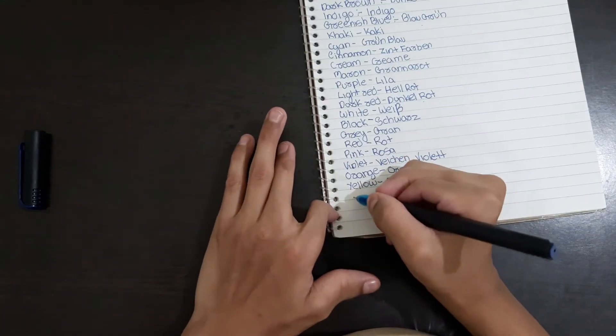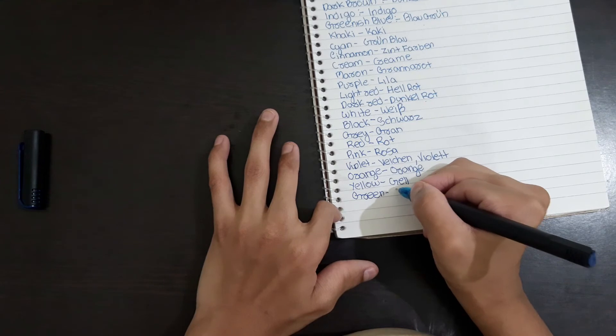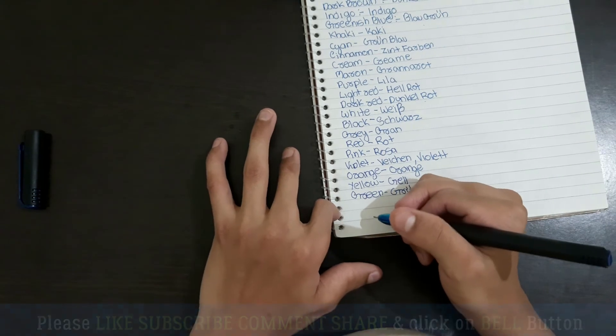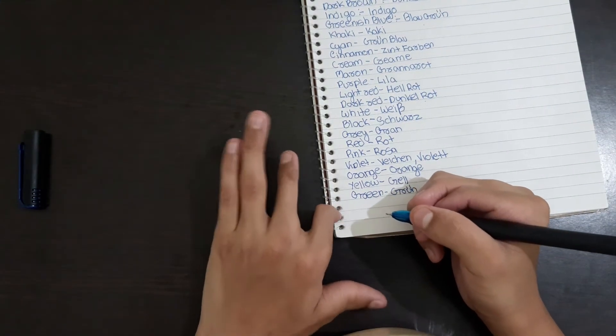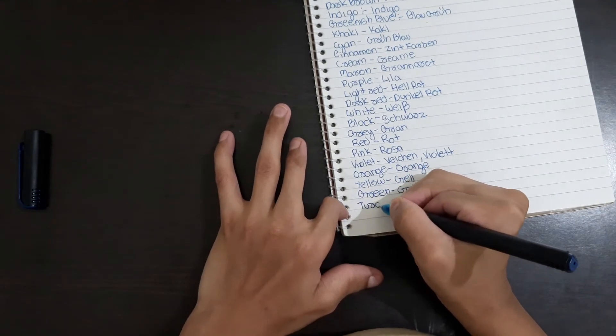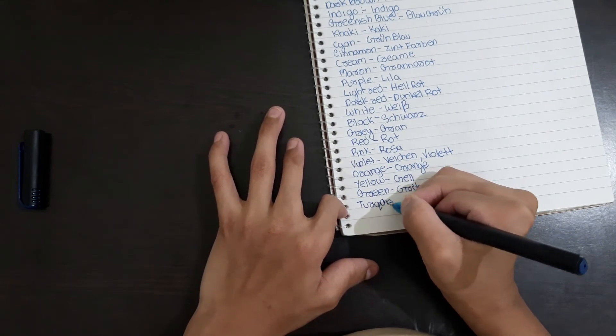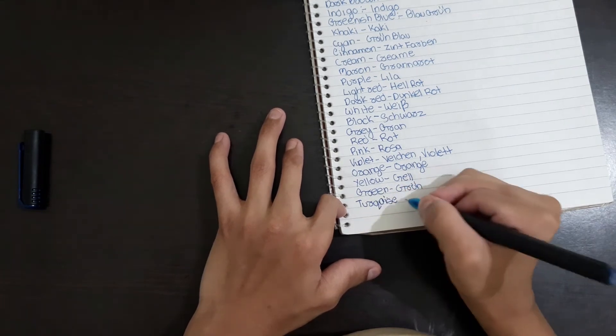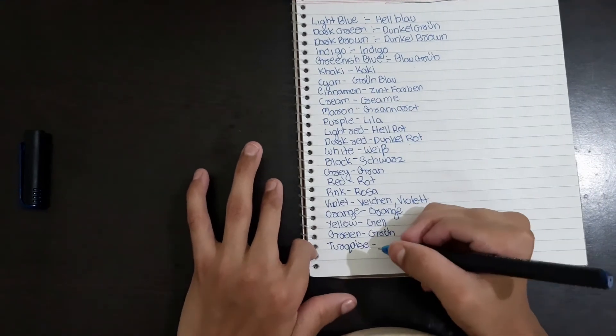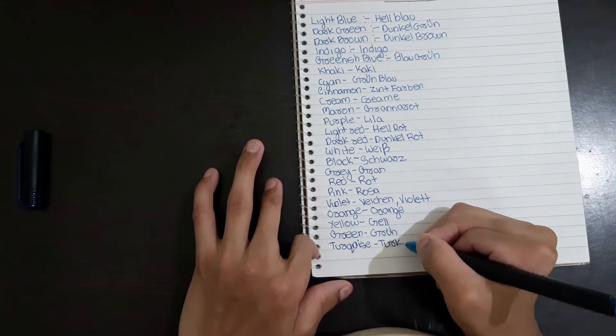Grün means green. Turquoise, not turquoise but Türkis, T-Ü-R-K-I-S.